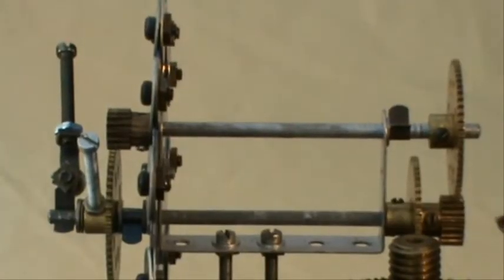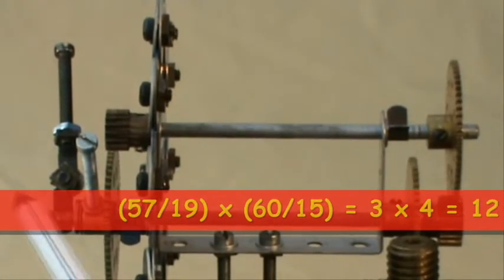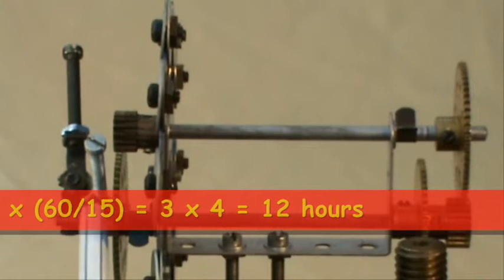More gears reduce the speed by 3 to 1 to this shaft here and 4 to 1 to the hour hand here.